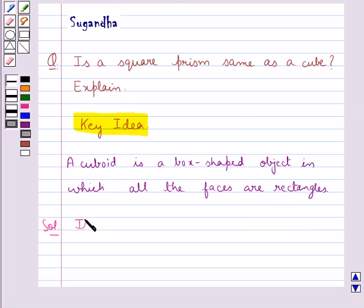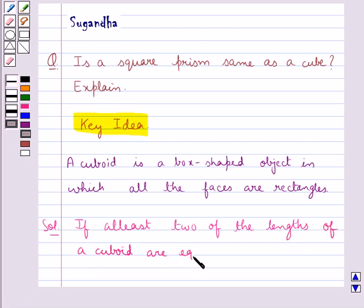If at least two of the lengths of a cuboid are equal, then the cuboid can be called a square prism.